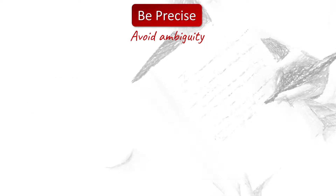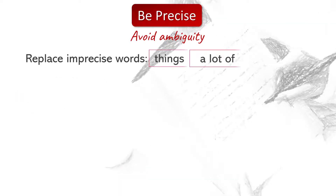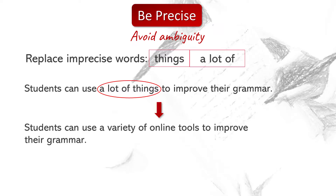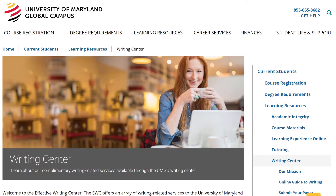Finally, avoid imprecise words like 'things' or 'a lot of.' For example: 'Students can use a lot of things to improve their grammar.' Revised: 'Students can use a variety of online tools to improve their grammar.' Remember, we at the Effective Writing Center are always here to help.